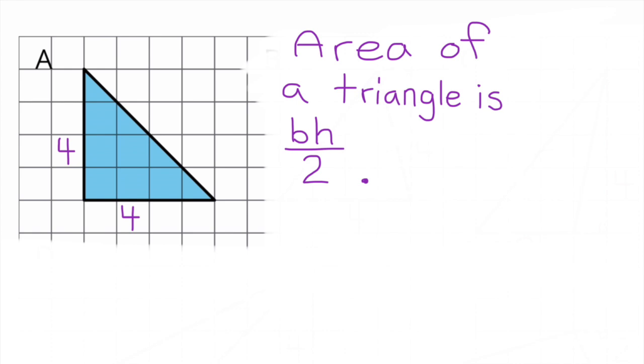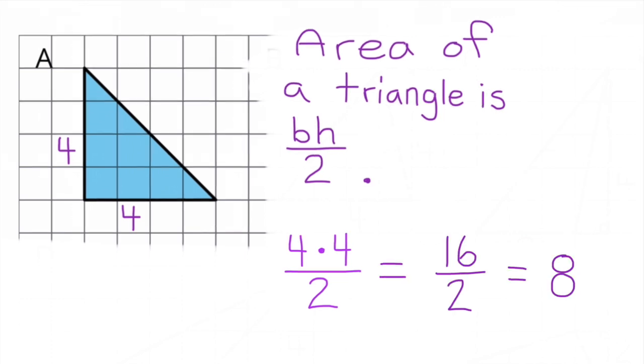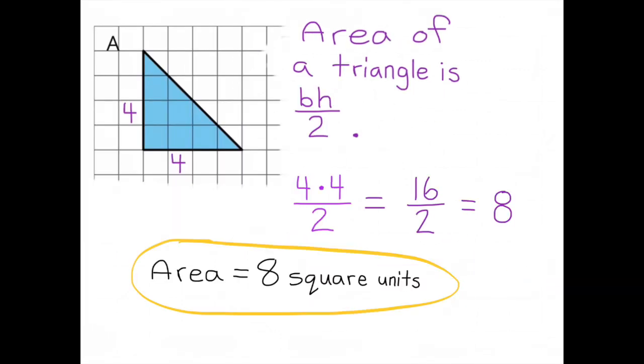So in this case, in triangle A, it's 4 times 4 divided by 2, or 16 divided by 2. Triangle A has an area of 8 square units.